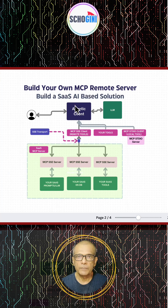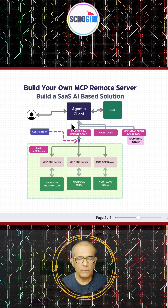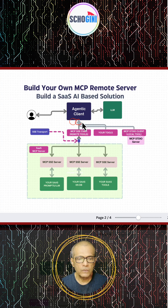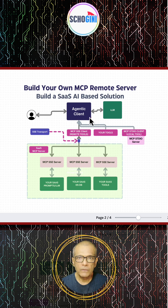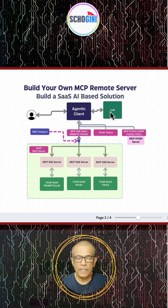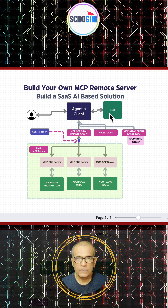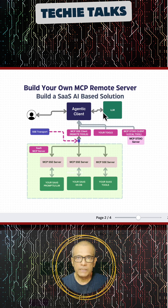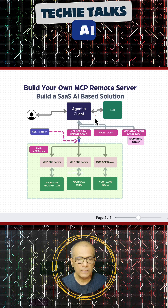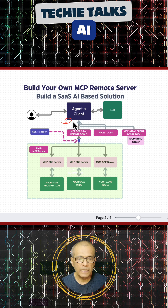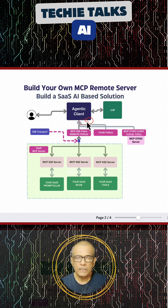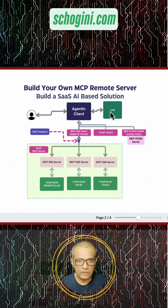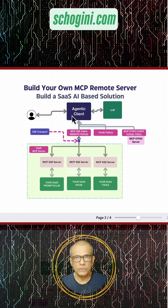Then agentic systems started appearing. What agentic mechanisms offer is additional tools needed to empower the interaction, because a large language model is a language model — it does not know precise calculations, or fetching information from a database, or web search. For such operations we needed an agent, and we could attach different tools to offer those solutions. It is the LLM that decides when to use those tools.